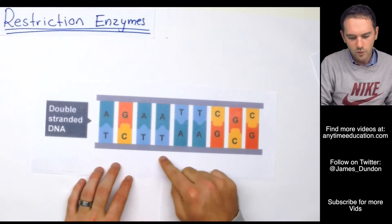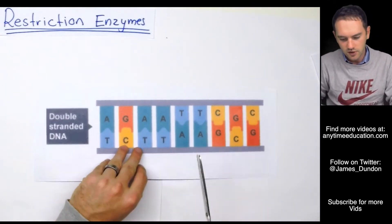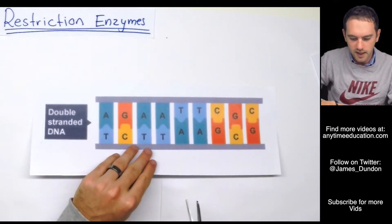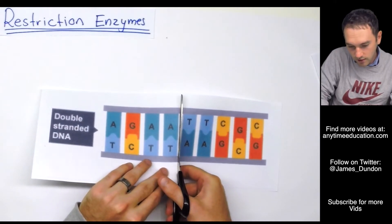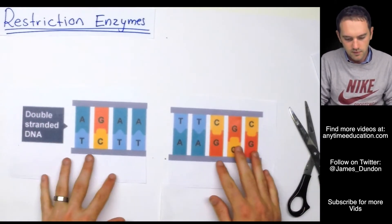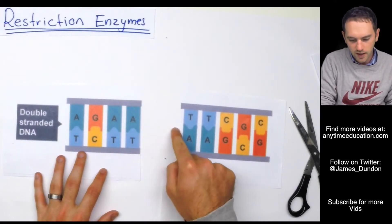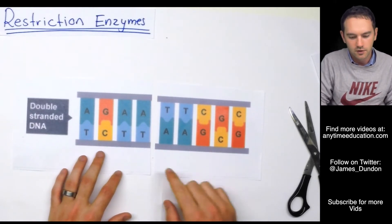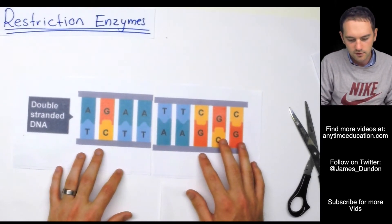So restriction enzymes can either cut in one of two ways. They recognize a sequence and then they can just cut straight along. So these are my restriction enzymes or genetic scissors as we like to call them. And we're going to cut along in between a set of bases. So now we've got two sections of DNA that were once together that are now cut. Now because they haven't exposed any free bases, we call that a blunt cut, leaving blunt ends. So the restriction enzyme has recognized this sequence and it's now cut, leaving blunt ends.